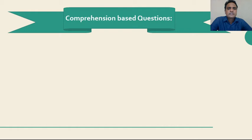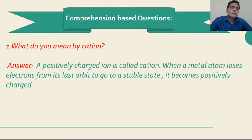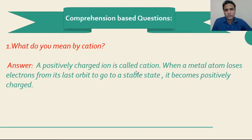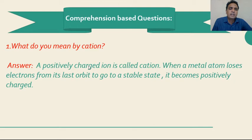Now, comprehension based questions. First one: what do you mean by cation? For a comprehension based question, you must remember that first you have to give the definition — a positively charged ion is called cation. When a metal atom loses electrons from its last orbit to go to a stable state, it becomes positively charged. We know that metal can donate electrons and it will be cation, and non-metal can accept electrons and it will be anion.